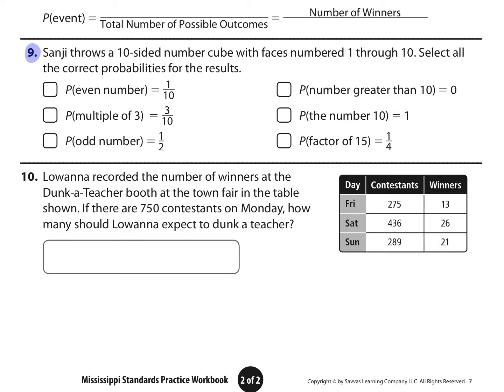Number 9, Sanji throws a 10-sided number cube with faces numbered 1 through 10. Select all the correct probabilities for the results. So the first one, the probability of choosing an even number is 1 out of 10. That's not true, because 5 out of the 10 sides are even. The next one is the probability of a multiple of 3 is 3 out of 10. So we have to think about our multiples of 3. We have 3, 6, 9. So there's 3 of those out of 10, so that's true.